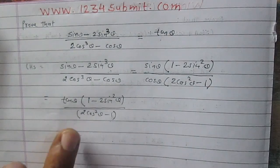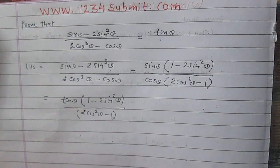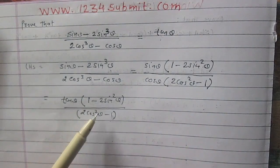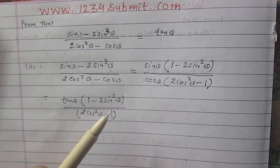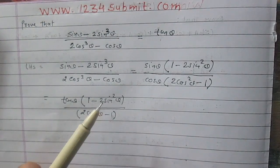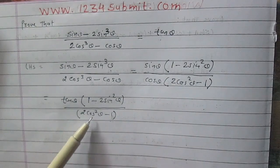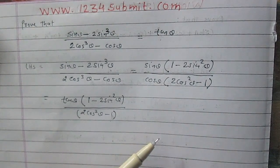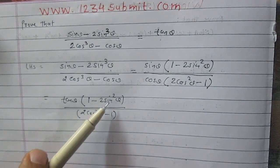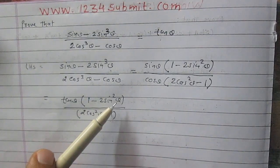We are to prove this quantity is equal to tan theta. This implies that these two terms are equal and can be cancelled. So we will either convert sin square theta into cos square theta or cos square theta into sin square theta using the identity. Let us reduce sin square theta in terms of cos square theta.